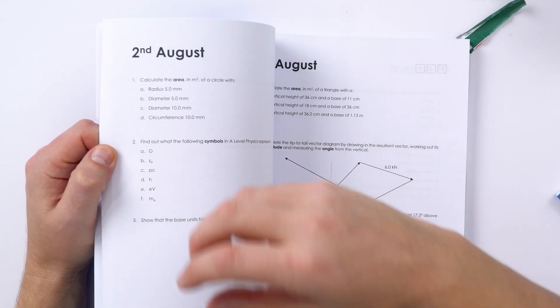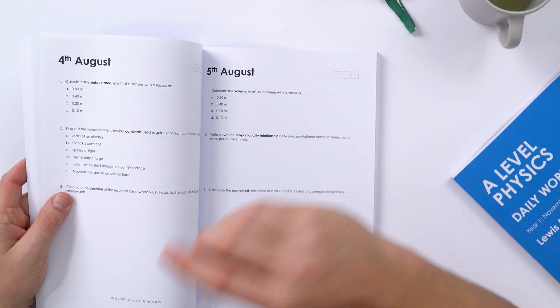That means maybe missing out some of the easier questions that you're completely confident with and maybe just working through those which you find a little bit more tricky. But ultimately by putting the physics that you're learning in school into practice day in, day out, that's going to make you better at answering physics questions. So I reckon this book would be great if you are in year 12.